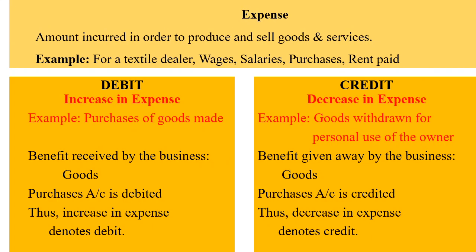Expense: the amount incurred in order to produce and sell goods and services is known as expense. Example for a textile dealer: wages, salaries, purchases, rent paid. Debit denotes increase in expense. Example: purchase of goods made. The benefit received by the business is goods, and so the purchases account is debited. Thus, increase in expense denotes debit.